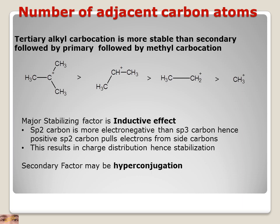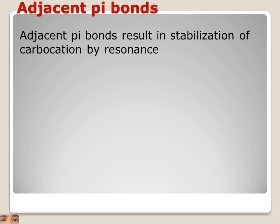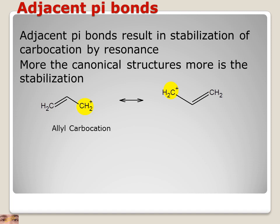The second effect which may be involved is hyperconjugation, although hyperconjugation mainly stabilizes free radicals. The second factor is adjacent pi bonds — adjacent pi bonds result in stabilization of the carbocation by resonance.